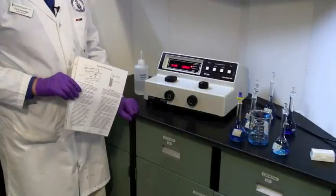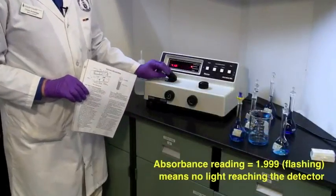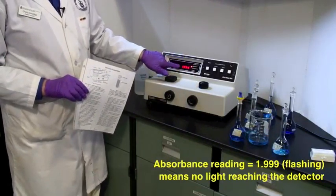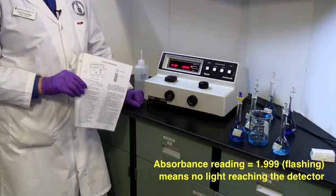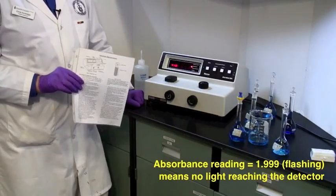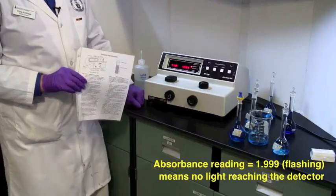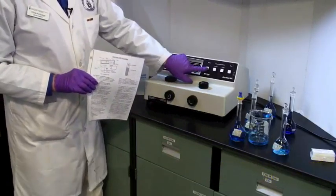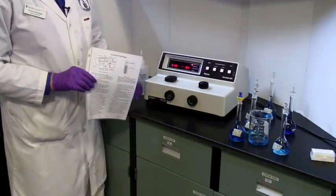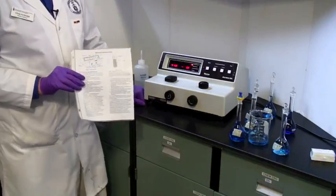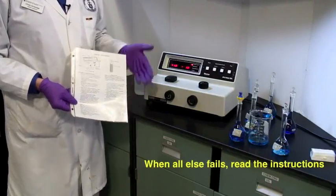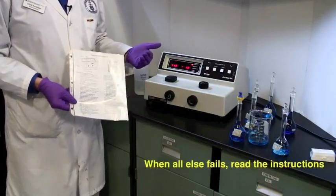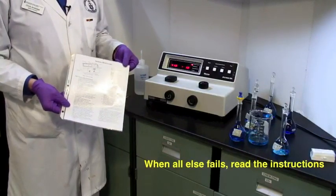A few last pieces of information. When there is nothing in the sample compartment, and there's a shutter across there, if you're in absorbance mode, it flashes 1999. That's as close as it can get to 2. And the flashing means, I'm not seeing any light. Now, that's all that that number means. If you turn the percent transmittance, you get an unstable number. The other thing to point out is, we have printed instructions. When all else fails, read the instructions. If you can't remember what I've said, this will always be available to you.